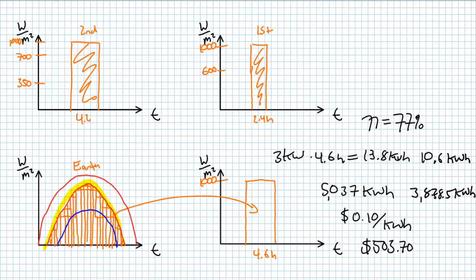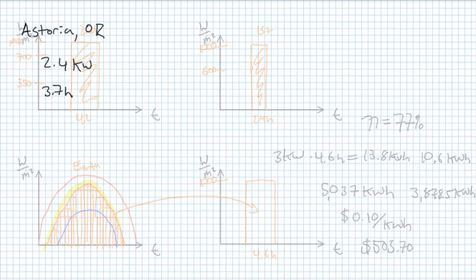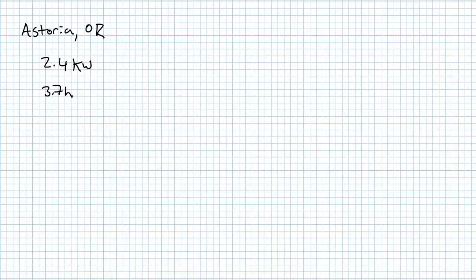Before we transition to that lecture, however, let's do a couple of example problems to see if you fully comprehend how peak sun hours form the core of estimating PV system performance. Our first example has a 2.4 kilowatt array in not so sunny Astoria, Oregon.